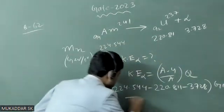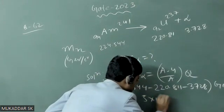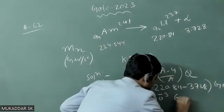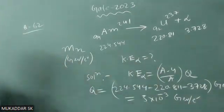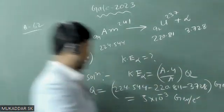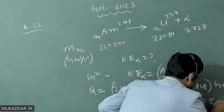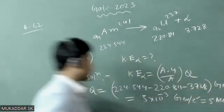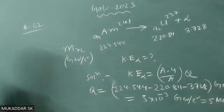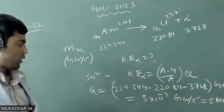Calculate, you will get 5 into 10 to the power minus 3 Giga electron volt per c square. It means it will be only 5 mega electron volt per c square. 10 to the power minus 3 GeV means mega electron volt.